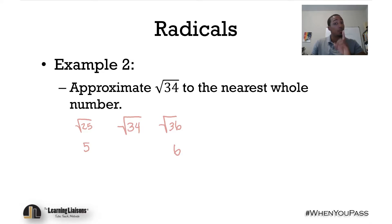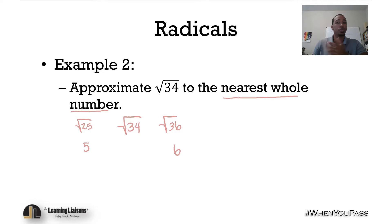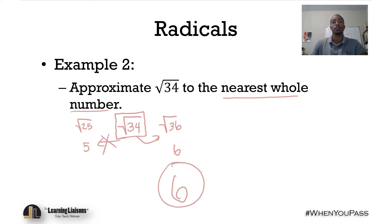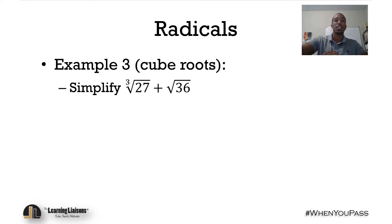But we need to approximate to the nearest whole number. So we ask: which perfect square is 34 closest to? We can agree it's much closer to 36 than to 25. So we can safely approximate the square root of 34 to the nearest whole number as 6.